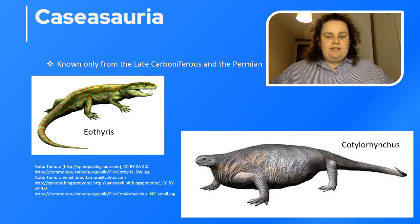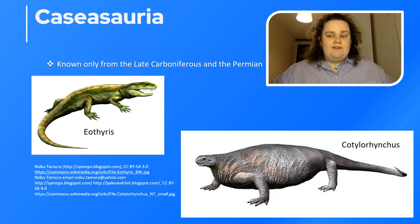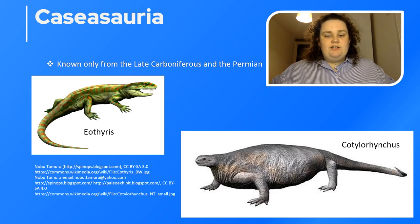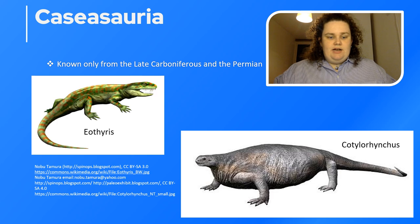Eothyris is known from North America, from the early Permian of Texas. Then we have the Caseasidae, known from North America, Russia, Italy, and France. An example is Cotylorhynchus from the early and middle Permian of Texas and Oklahoma — considered one of the largest early terrestrial vertebrates at three meters in length, but with a disproportionately small skull. It was most likely a herbivore and represents the basal end of the synapsids.